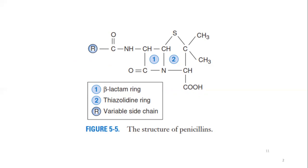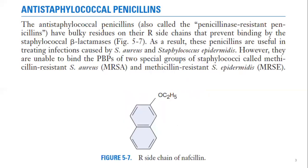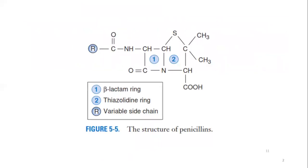Antistaphylococcal penicillins were introduced by scientists because Staphylococcus aureus and Staphylococcus epidermidis were showing resistance to natural penicillins. These bacteria were producing beta-lactamase enzymes and were actively degrading and destroying the beta-lactam ring. The beta-lactam ring is the principal active component of penicillin — it is the area by which the penicillin acts. When it is destroyed by beta-lactamases produced by the microorganisms, the penicillin cannot work at all.